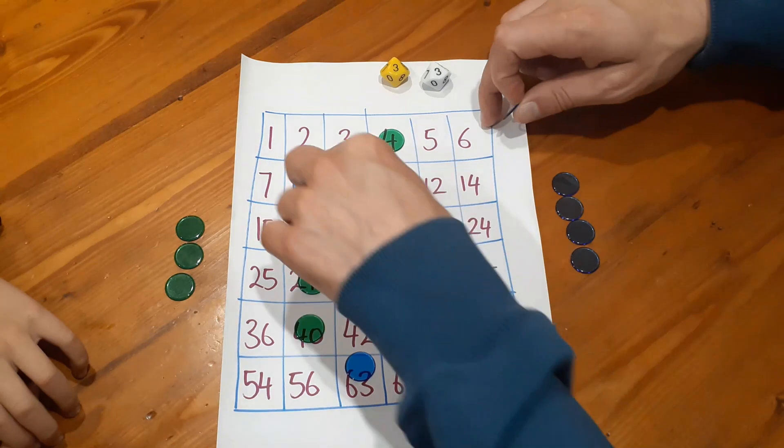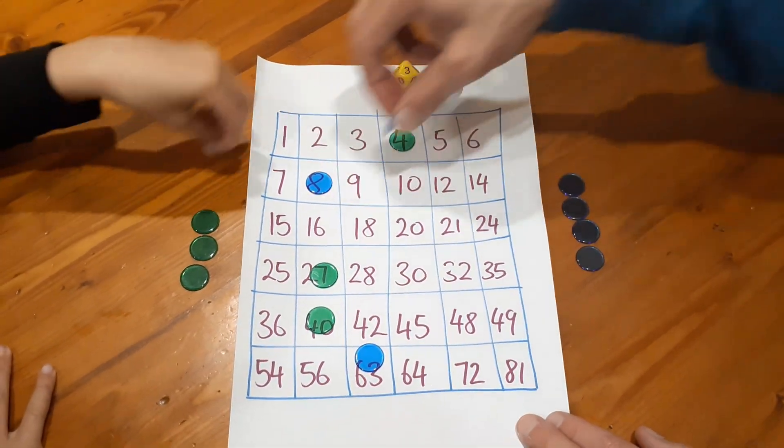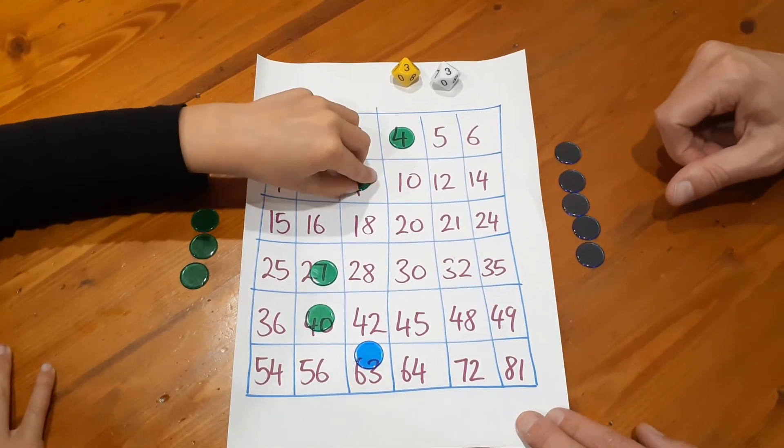So at the start of that turn Nash and I both had four counters that we needed to get rid of. Now suddenly Nash is down to three and I am up to five.